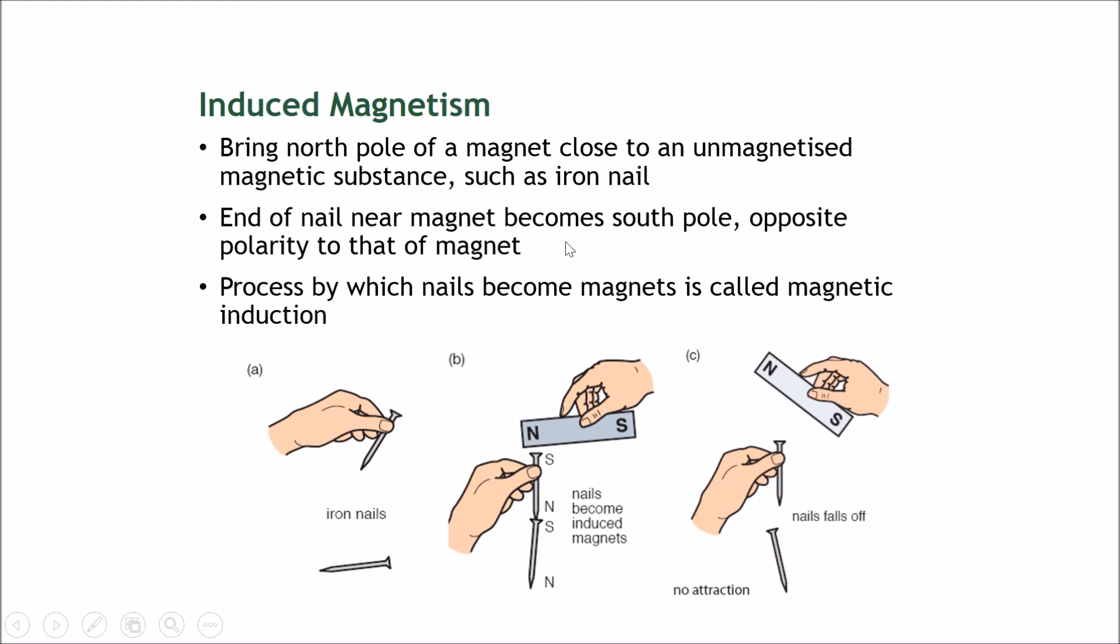It will always become the opposite pole to what it is brought near to—always opposite polarity to that of the magnet. Therefore, once this side becomes a south pole, the other side will become a north pole. Because this is a north pole, you can use it to induce another nail. The process by which nails become magnets is called magnetic induction.